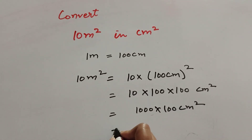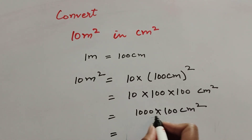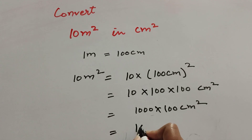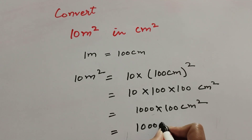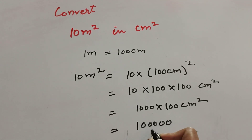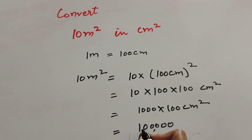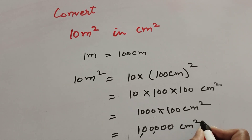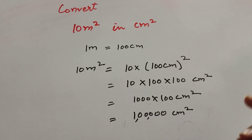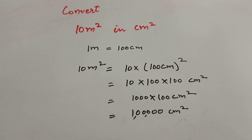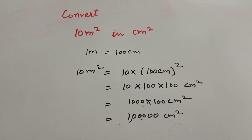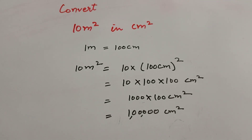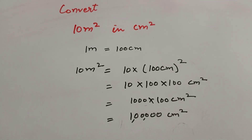Now 1000 x 100 is equal to 1 lakh centimeter square. So 10 meter square is equal to 1 lakh centimeter square. Thanks for watching — like and share my video, and subscribe to my YouTube channel.